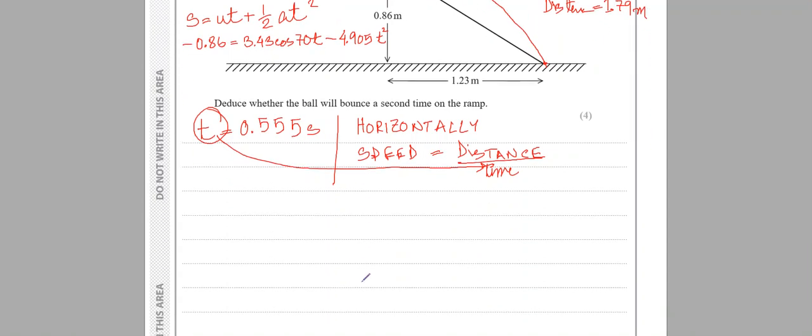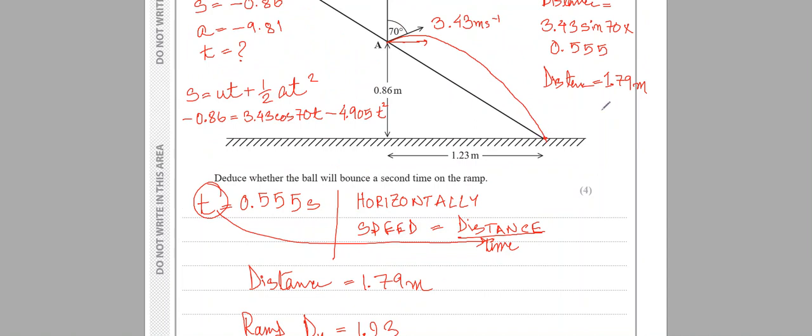The ball travels 1.79 meters horizontally. The ramp's horizontal distance is 1.23 meters. If it were 1.23 meters, it would have bounced on the ramp. But at 1.79 meters, it will not bounce on the ramp. It will fall somewhere beyond. I hope you all got the idea.